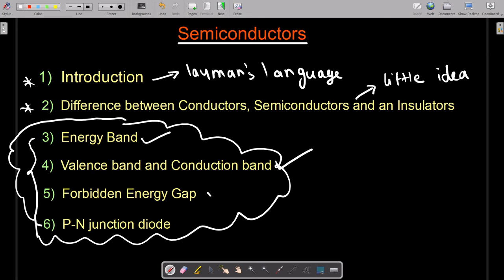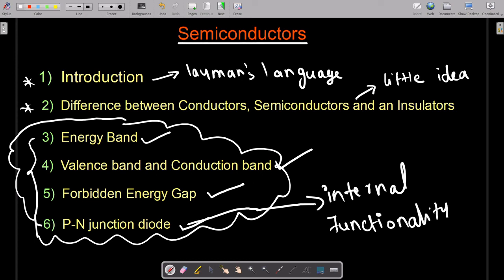Then we're going to deal with forbidden energy gap. At the end we will see the function of PN junction diode, or rather the internal structure or internal functionality of the PN junction diode.